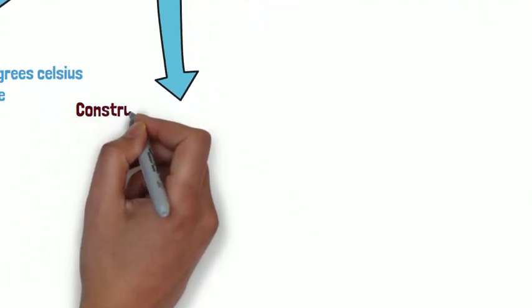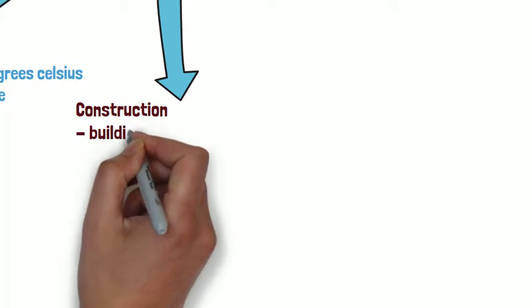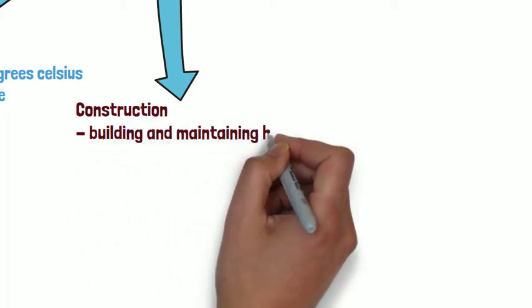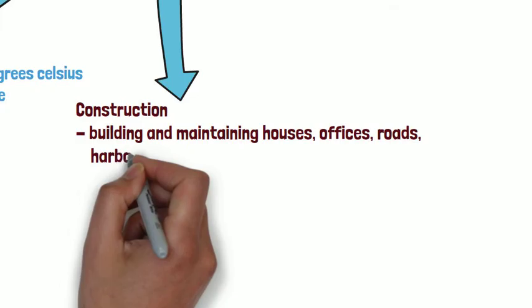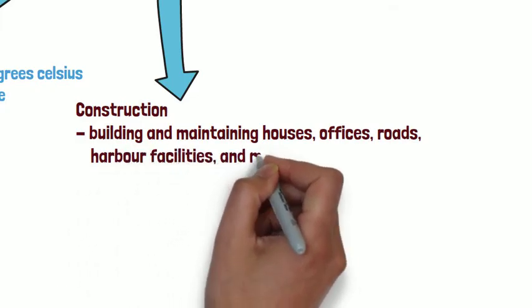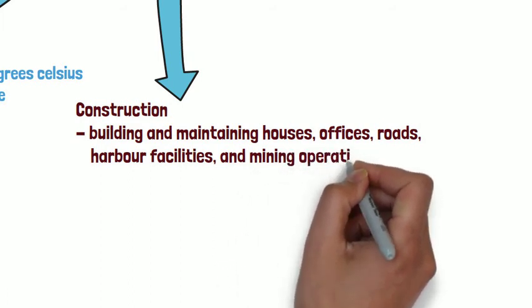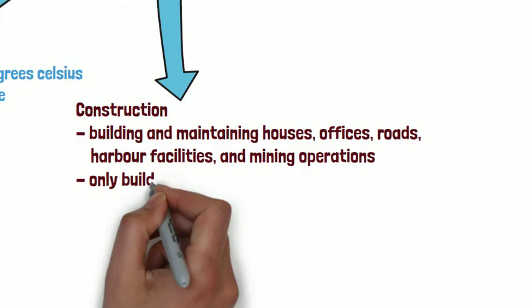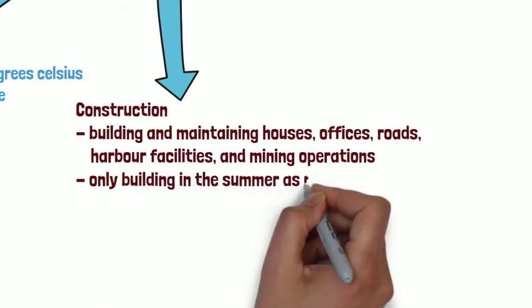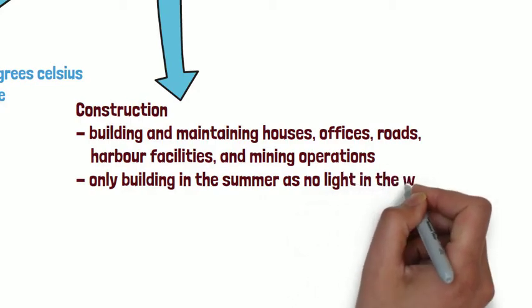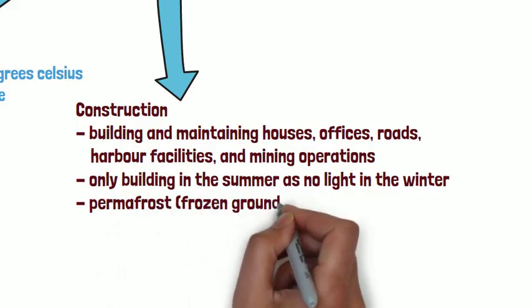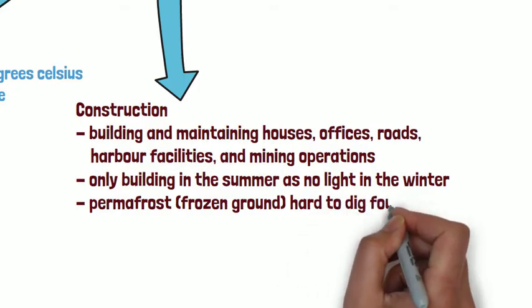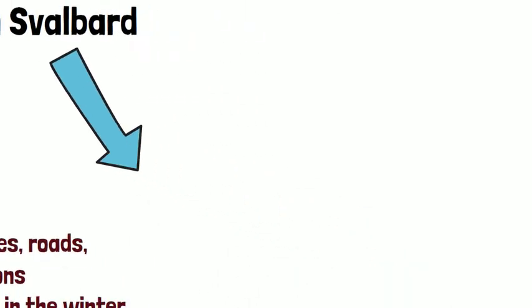Our second challenge is construction. Building and maintaining houses, offices, roads, and the harbour, as well as keeping the mining operations open, is quite a big task. Building work only tends to take place in the summer months, as in winter there is little to no light. Also, because the ground is made of permafrost — permanently frozen ground — it's very hard to dig for foundations, so a lot of buildings are built on stilts.